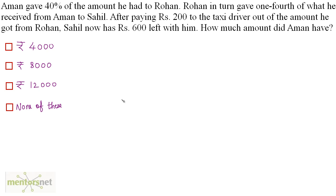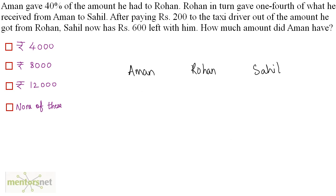Aman gave 40% of the amount he had to Rohan. Rohan in turn gave 1/4 of what he received from Aman to Sahil. After paying Rs 200 to the taxi driver out of the amount he got from Rohan, Sahil now has Rs 600 left. How much amount did Aman have? We have 3 people: Aman, Rohan, and Sahil. Let us assume Aman had X rupees.